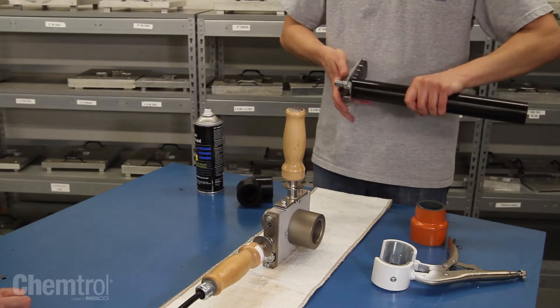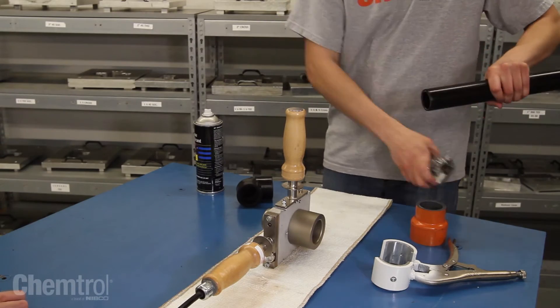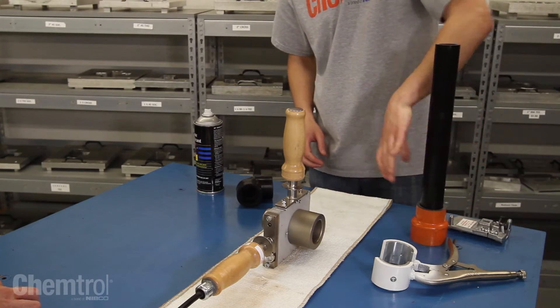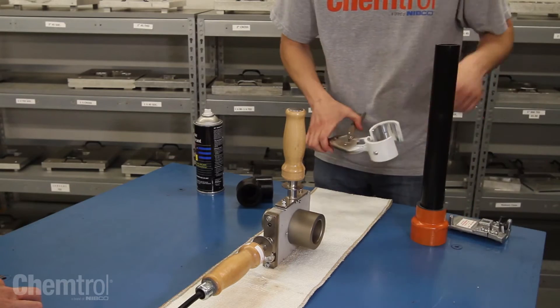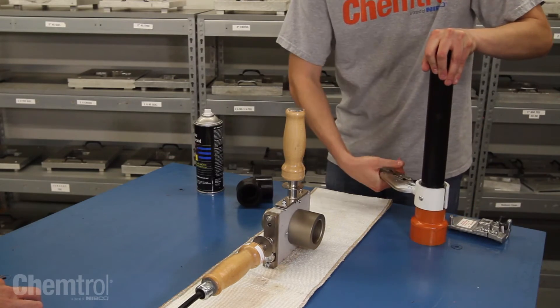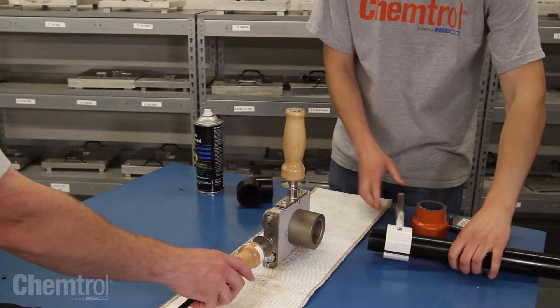Bevel the outside diameter of your pipe. Insert the pipe into the depth gauge then attach the pipe clamp. This will expose the beveled pipe end for fusion joining.